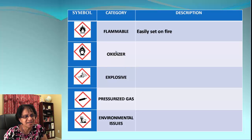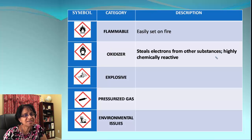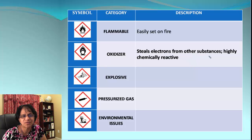The next one is oxidizer. The GHS symbol for oxidizer looks almost similar to flammable, except if you look carefully it has an O inside — that O stands for oxidizer. These are chemicals that can still set a fire. They actually steal electrons from other substances and are highly chemically reactive.